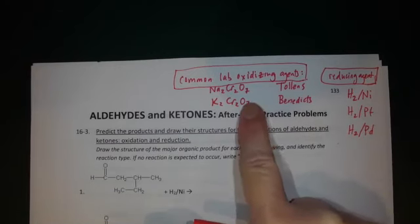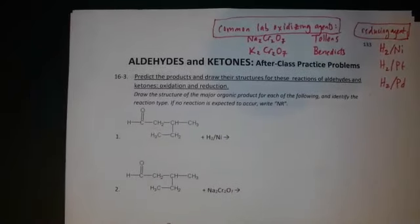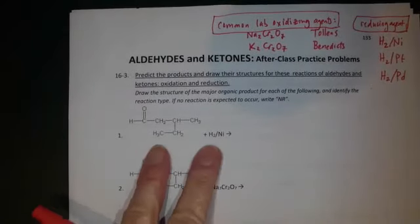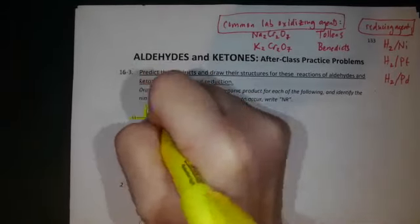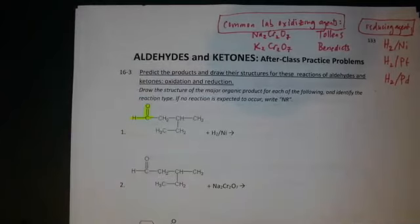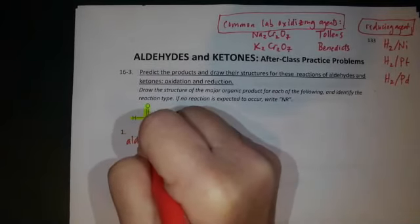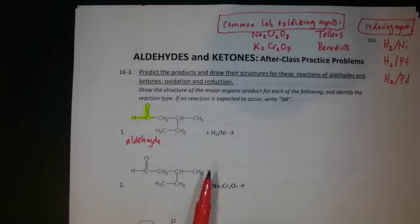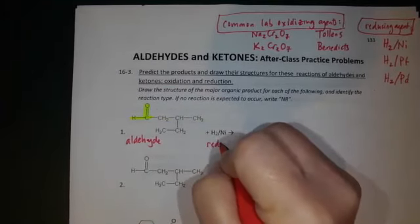If you see any of those oxidizing agents, it's an oxidation reaction. For reduction: H₂ itself is a good reducing agent — it needs a catalyst, almost always a metal such as nickel, platinum, or palladium. The key is the hydrogen, because reduction is gaining bonds to hydrogen. So if you see H₂ with a metal catalyst, that means reduction. Start by identifying what you have — for example, this is an aldehyde — and then identify the type of reaction.